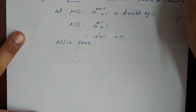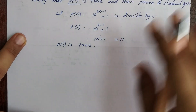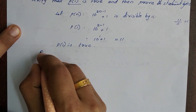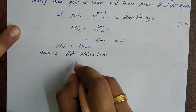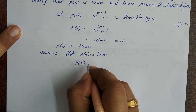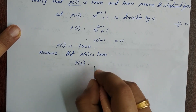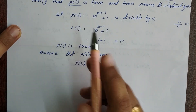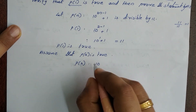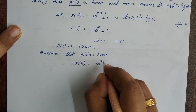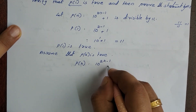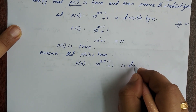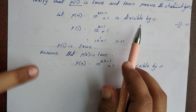In the next step, we assume P of k. Assume that P of k is true. That is, 10 raised to 2 into k minus 1 plus 1 is divisible by 11.